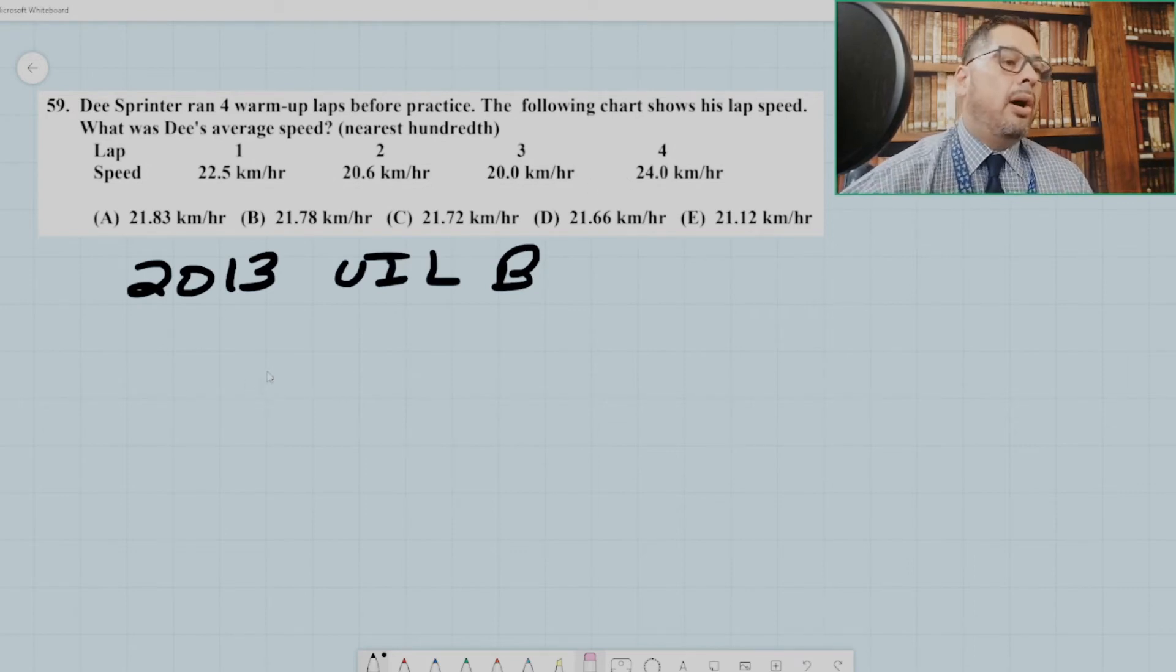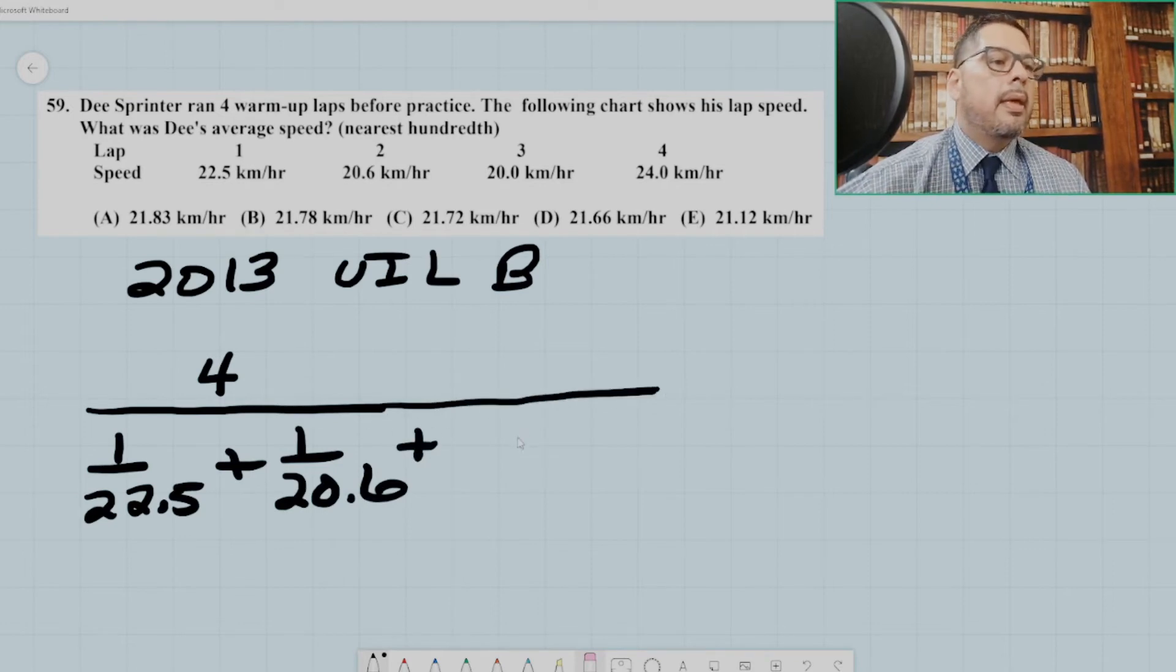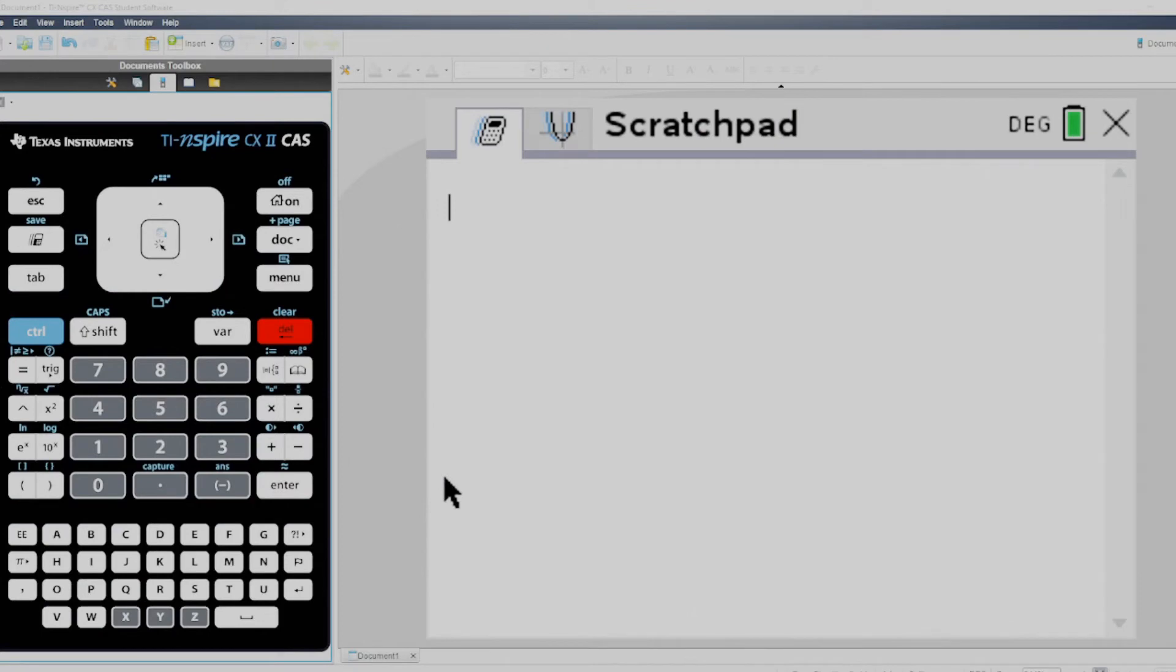So he's traversing the same distance four different times and they ask for the average speed. And so the answer is the harmonic mean of the set of rates. So the answer is 4 divided by 1 over 22.5 plus 1 over 20.6 plus 1 over 20 plus 1 over 24. Let's plug this into the calculator.